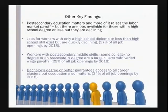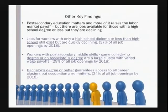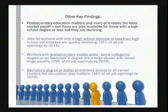Key findings: post-secondary education matters, but that's just a necessary condition — occupations also matter. Jobs for workers with only a high school diploma are declining by 37%. They are down 29% in the middle-skill category, which Georgetown's Center for Education and the Workforce defines as someone with some college or an associate degree. Jobs requiring a bachelor's degree are declining by 34%.